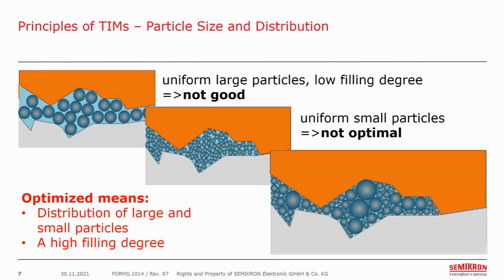Vice versa, when the particles are very small, the filling degree is higher, but the heat flux must go through many thermal interconnections between these particles. This is also not optimal. Optimal means a balanced mix of large and small particles plus a high filling degree along with the fewest interconnections as possible between these particles.